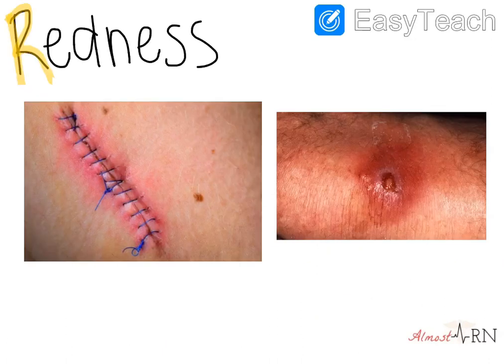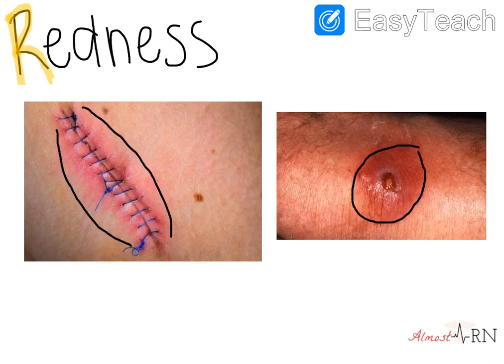First up is redness. It is as simple as it sounds — you are going to assess the wound and incision site for any redness. As you can see here, there's some redness around these sutures, and here there's a lot of redness too. That could indicate inflammation and may be painful, so you want to make sure that you document redness.